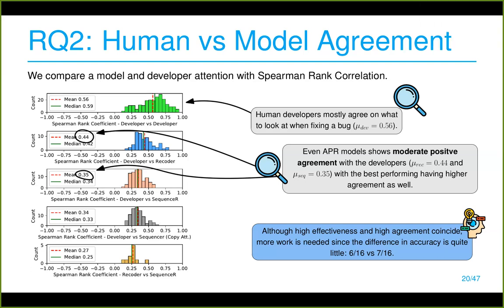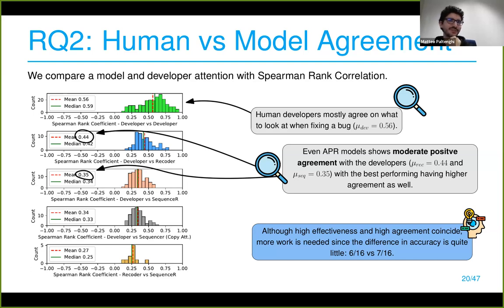Comment: A hypothesis for why copy attention doesn't work as well here as in code summarization — in summarization there's a stronger chance to copy the right token, for example in a recursive call copying the function name, or in a getter needing 'get.' But in bug fixing it's not always obvious you need to copy a token exactly — maybe you need to change a sign or operator. The arithmetic example shown earlier would be a case where copying randomly doesn't make sense. That interpretation makes perfect sense.